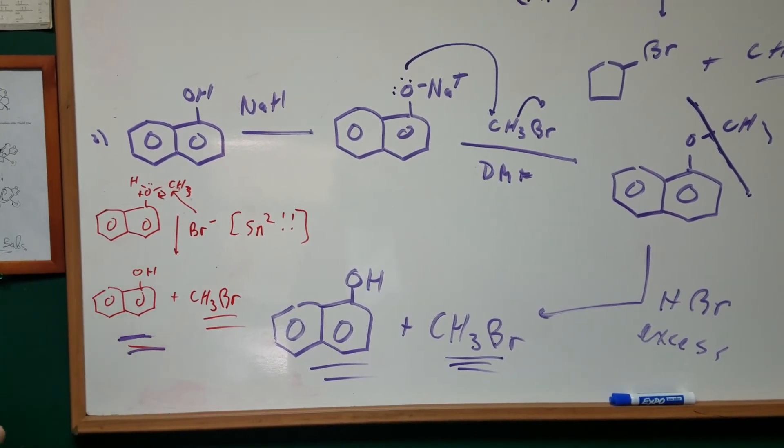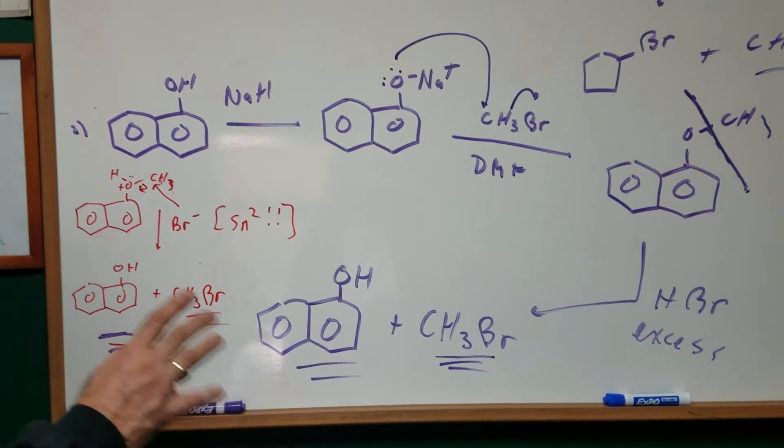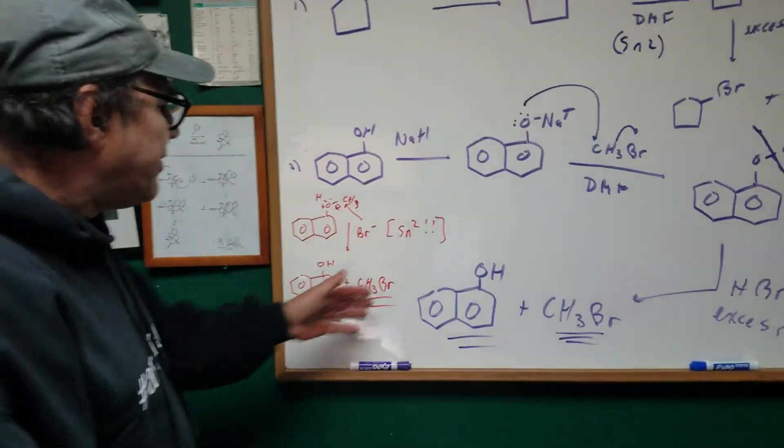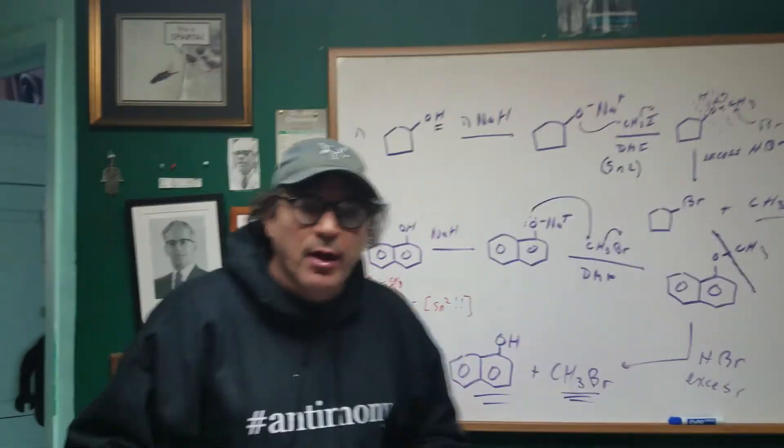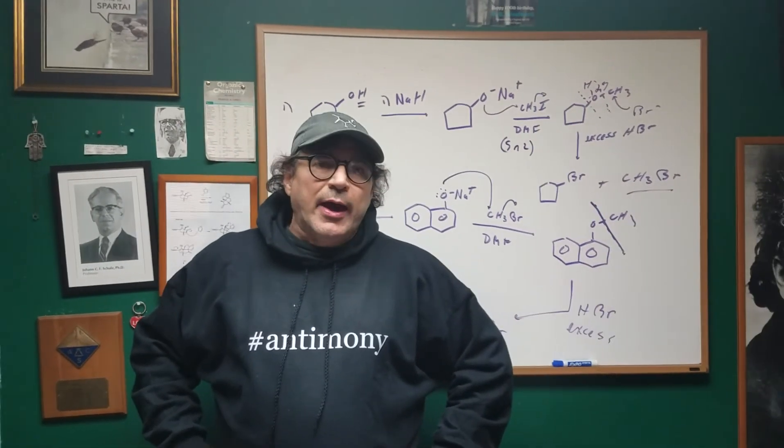So as you can see, the answer I was looking for is you get an alcohol and you get a halide. But usually you get two halides, but not if it's attached to an aromatic ring. I hope that helps and gives you a good understanding of how to do an ether cleavage.